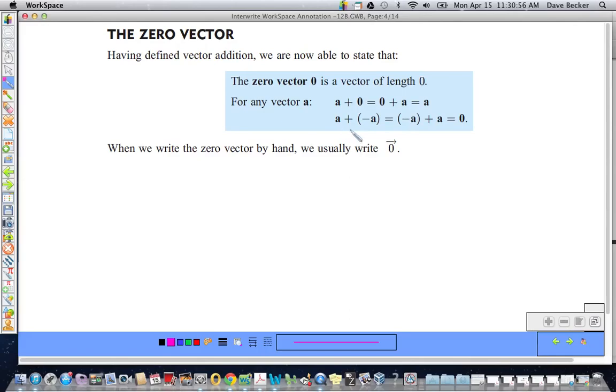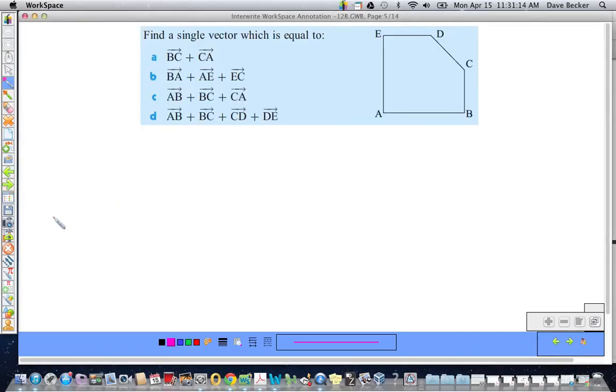But if I add A and its opposite, that's the same as taking A's opposite and adding A. And that will result in zero. And we call that the zero vector. You don't see it very often. But if we write the zero vector, we write it with a zero and the vector symbol above it.